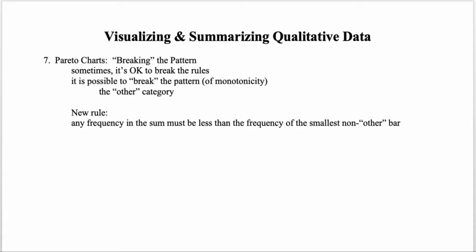These rules are presented as guidelines, and sometimes it's okay to break them. It's possible to break the pattern of monotonicity — where everything is increasing or decreasing — particularly if you have an 'other' category, where many different values are clumped together. The rule is that any frequency in the 'other' category sum should be less than the frequency of the smallest non-other bar, so that no individual value within 'other' would have warranted its own bar further to the left.